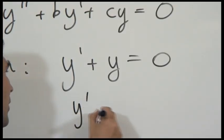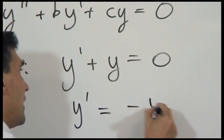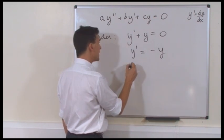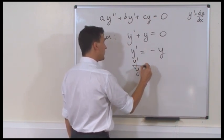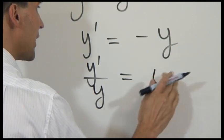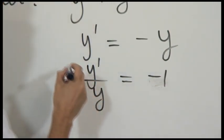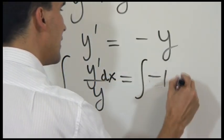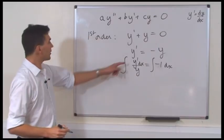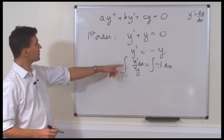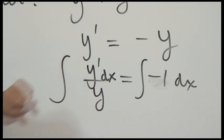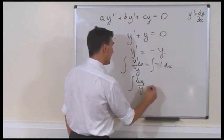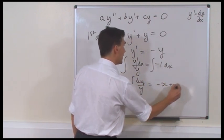We solve it — one way you can do it is bring the Y over to the other side. That's Y prime equals minus Y. We can divide by Y. Y prime over Y is equal to minus 1. And now we integrate both sides with respect to X. So that's the integral of minus 1 DX on the right-hand side. Now, Y prime is DY by DX. So DY by DX times DX becomes DY. And this integral becomes DY over Y is equal to minus X plus a constant.